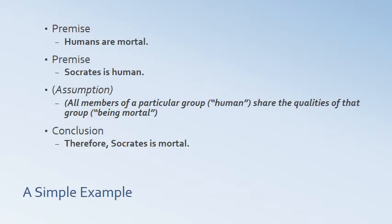A very simple example we've seen before: we have our premise, humans are mortal; we have another premise, Socrates is human; and we come to the conclusion, therefore Socrates is mortal. We could spell out the assumption — that all members of a particular group, humans, share the qualities of that group, being mortal. So if humans are mortal and Socrates is human, he shares the quality of being mortal. Very simple: premise, premise, conclusion.